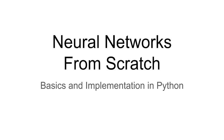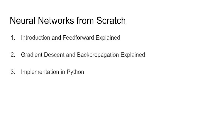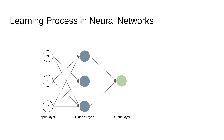Welcome to my series on neural networks from scratch. In this series, my goal is to explain what actually happens in a neural network and implement it from scratch using just Python. In the first part, we'll discuss notations and the feed forward process. In the second video, we'll cover the cost function, gradient descent, and back propagation. In the last video, we'll implement our own neural network from scratch.